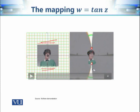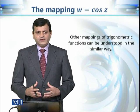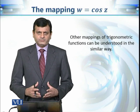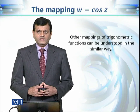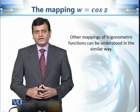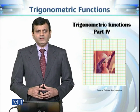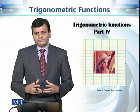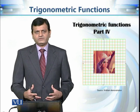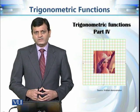That is how we calculate the image of different sets in the w-plane under the mapping tan(z). We have now discussed in detail the mappings sine(z), cosine(z), and tan(z). This concludes our discussion of these three trigonometric mappings, and we will continue with other trigonometric functions in our next module.